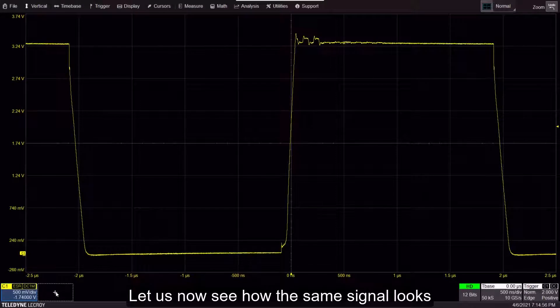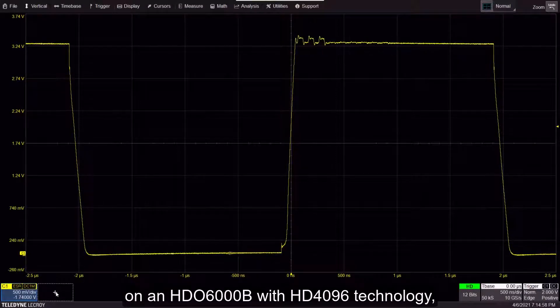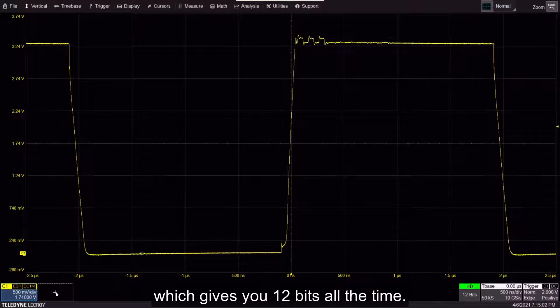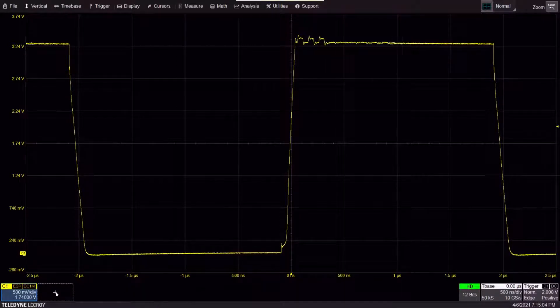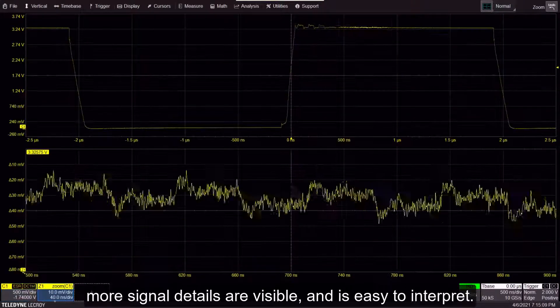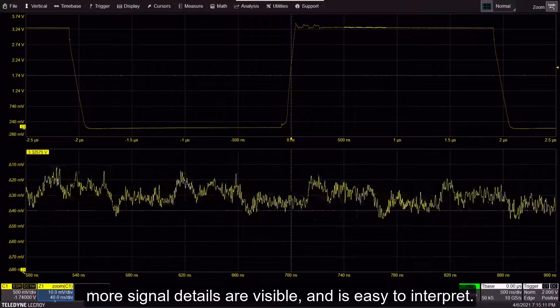Let us now see how the same signal looks on an HDO6000B with HD4096 technology which gives you 12 bits all the time. The waveform is clean and crisp, more signal details are visible and is easy to interpret.